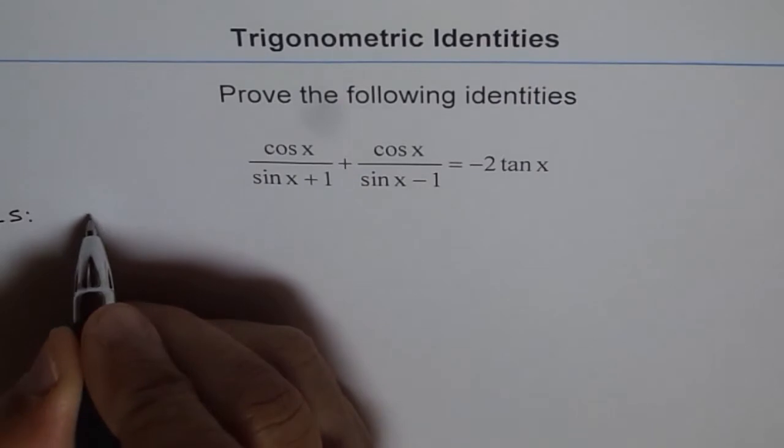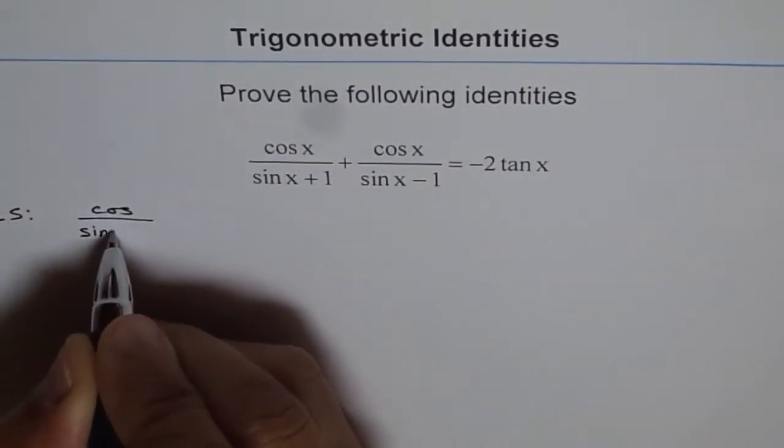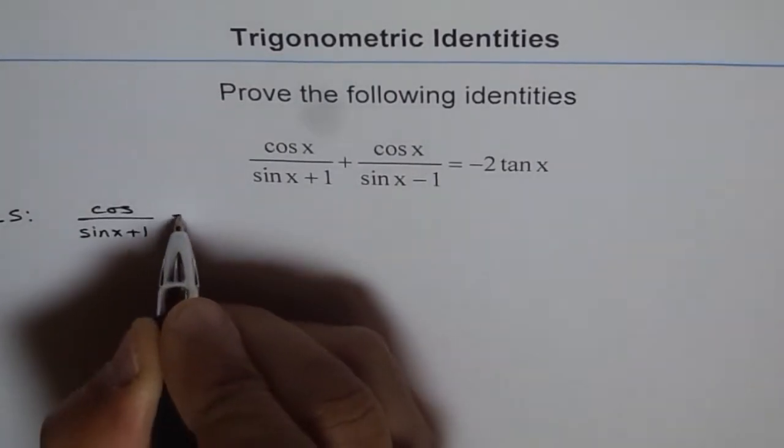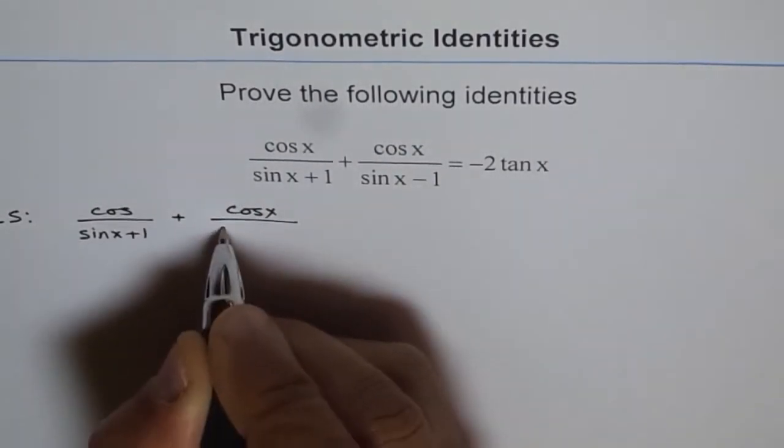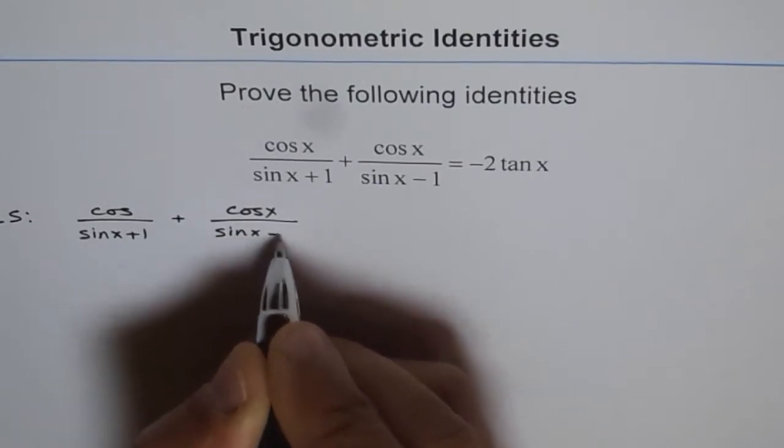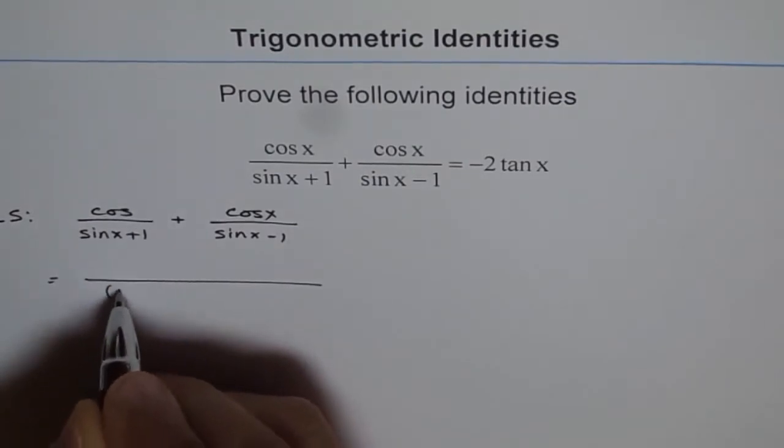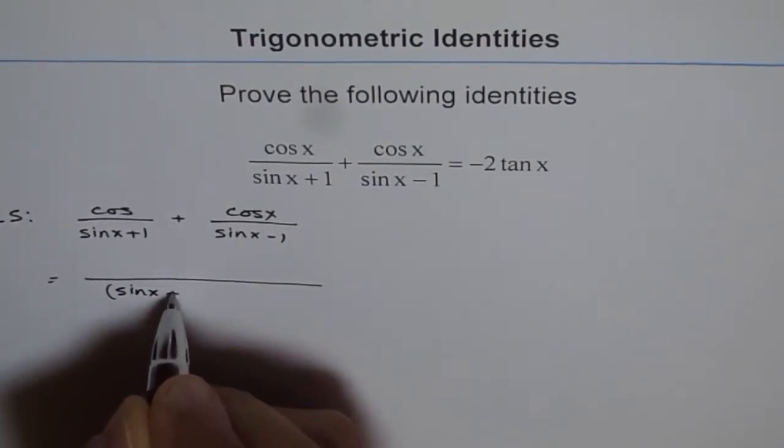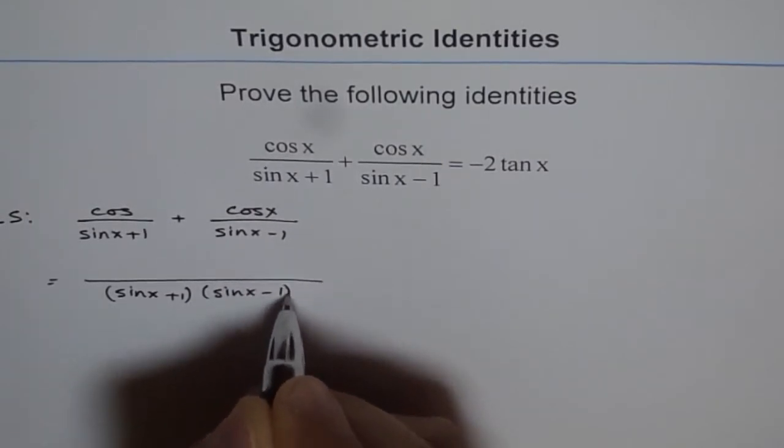The left side is cos x over sin x plus 1, plus cos x over sin x minus 1. We can take a common denominator here. The common denominator is sin x plus 1 times sin x minus 1.